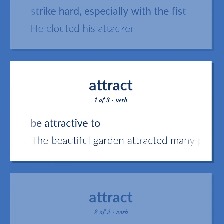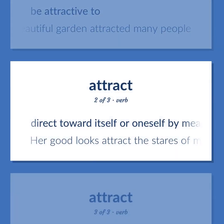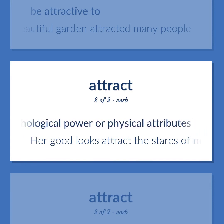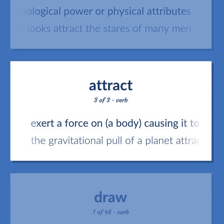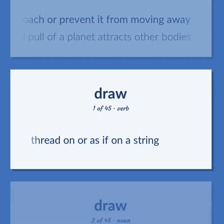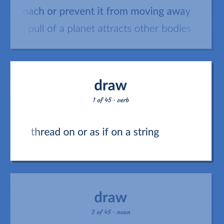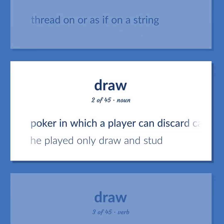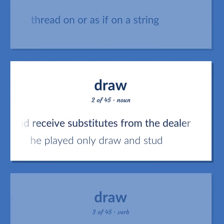Attract: to be attractive to — 'The beautiful garden attracted many people.' Also, to direct toward itself or oneself by means of some psychological power or physical attributes — 'Her good looks attract the stares of many men.' Also, to exert a force on a body causing it to approach or prevent it from moving away — 'The gravitational pull of a planet attracts other bodies.' Also, to thread on or as if on a string. Draw: poker in which a player can discard cards and receive substitutes from the dealer — 'He played only draw and stud.'